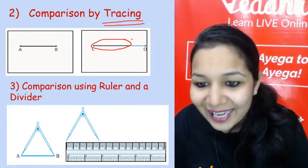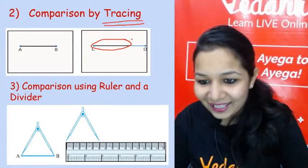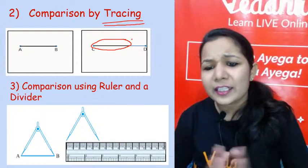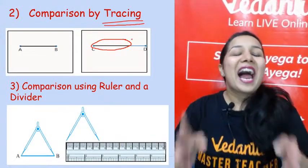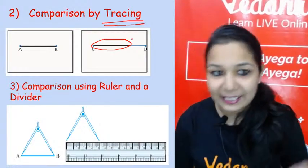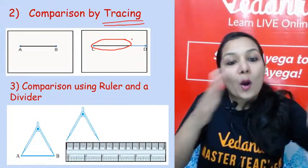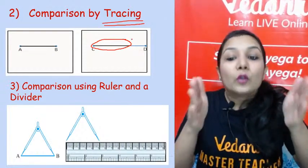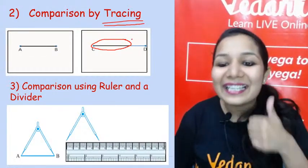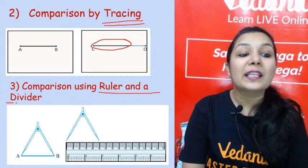The last method by which I can measure a line segment is by a ruler and a divider. You might have seen a divider in your geometry box — a divider has two end points like a line segment. Place one point at the start of the line segment and the other at the end, then take the divider to the ruler to measure it.